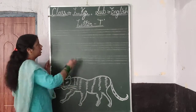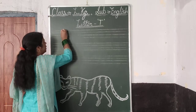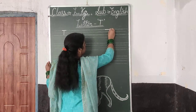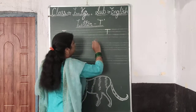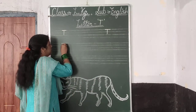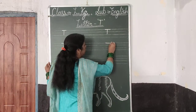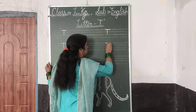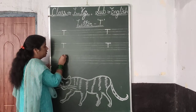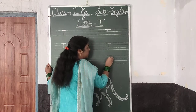Now we will start. This letter T. Next line. This letter T. Next line. This letter T.